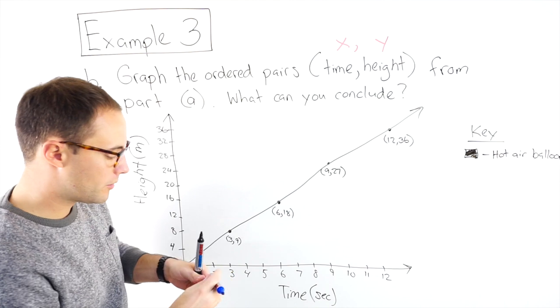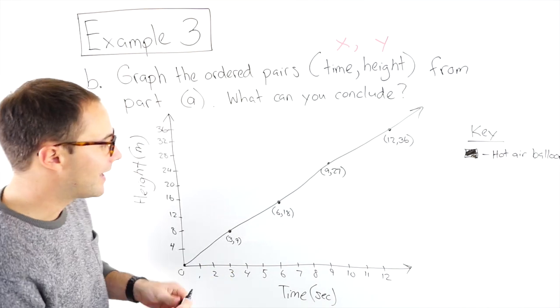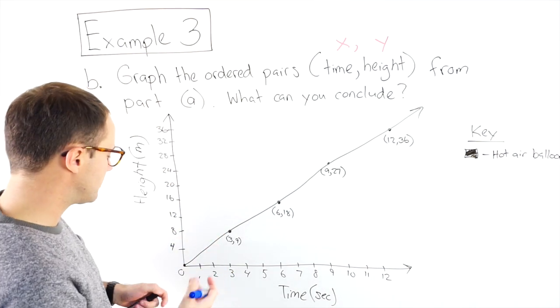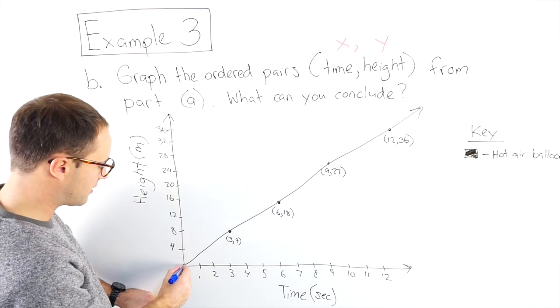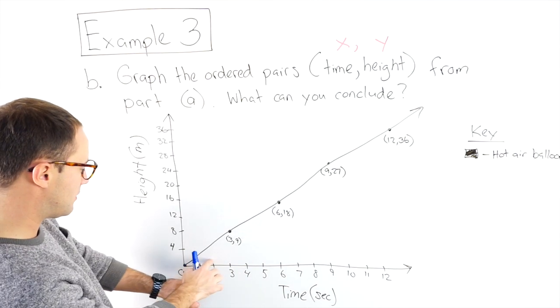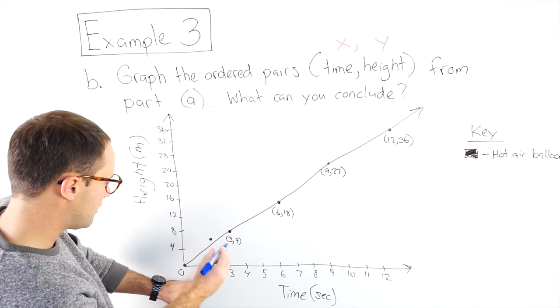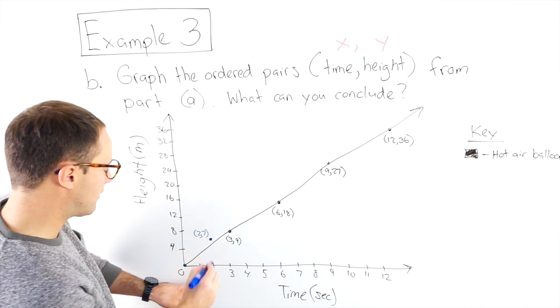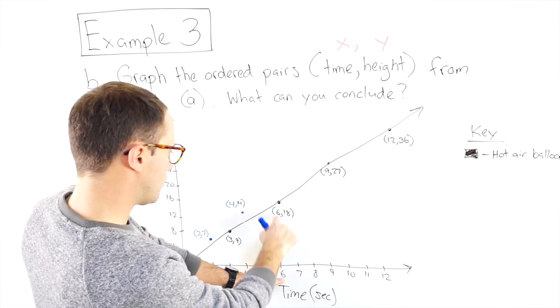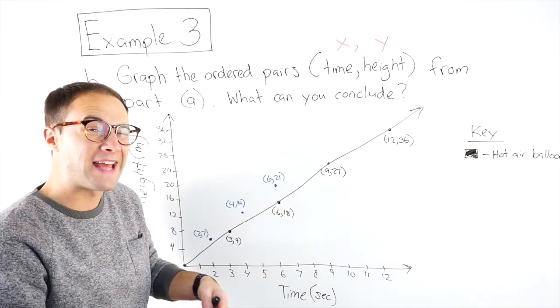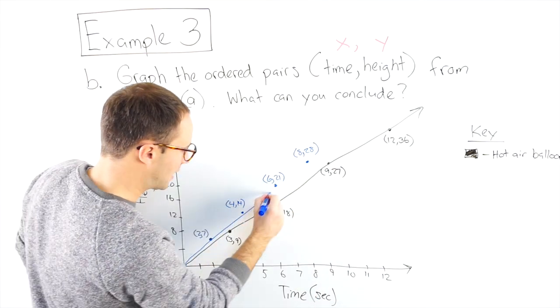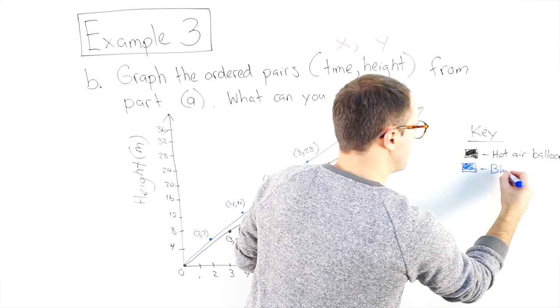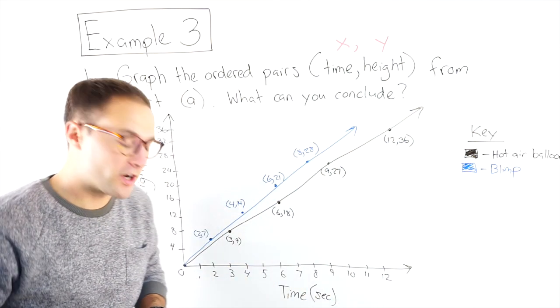Next, with the blue, we're going to do the blimp. And the blimp, every two seconds rose seven meters. So two seconds, we're starting here, zero zero. Two seconds went up to seven. And that's going to be two, seven. Blue was the blimp. There's our graph.